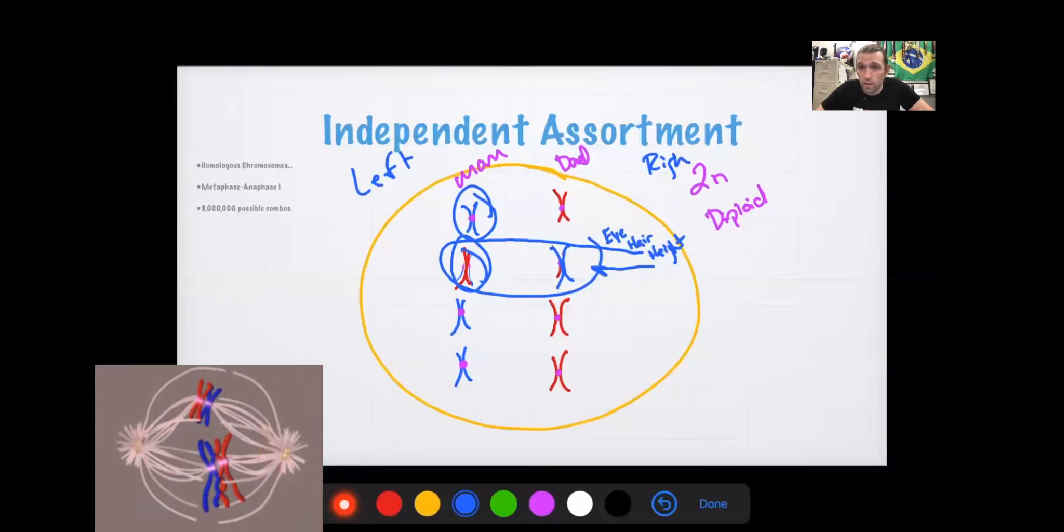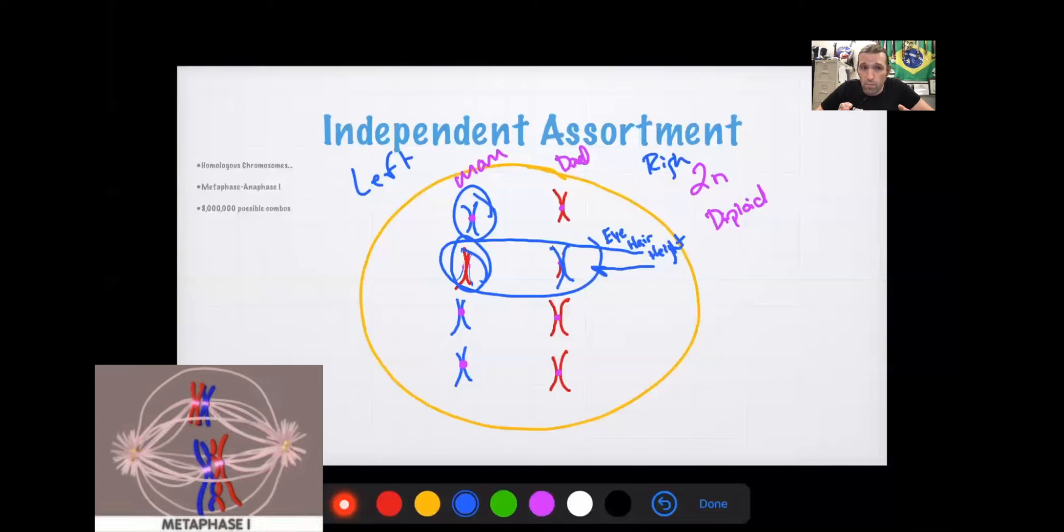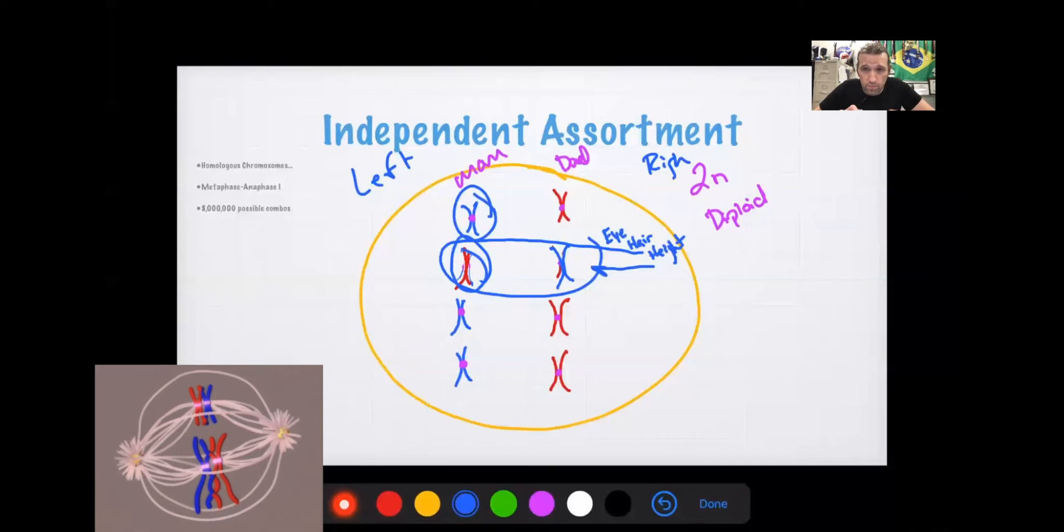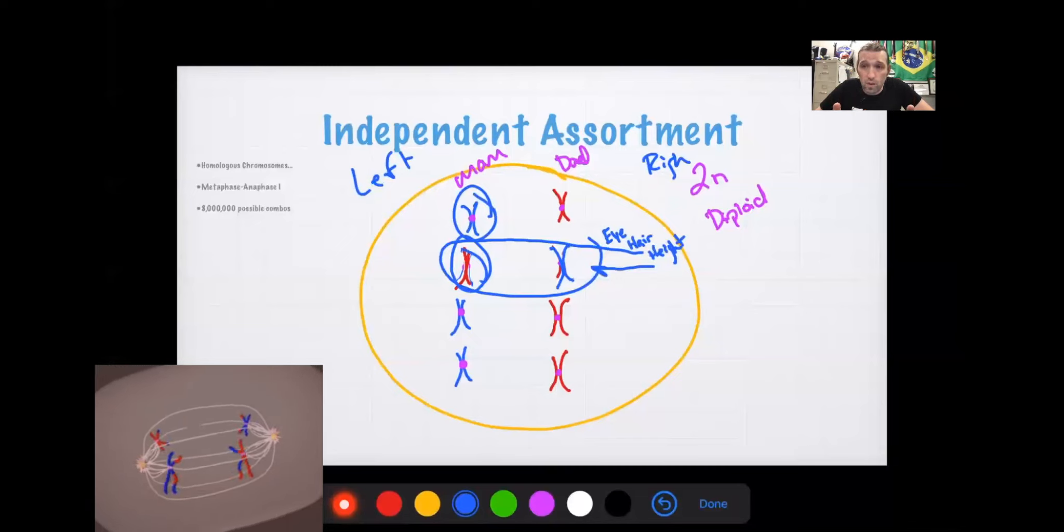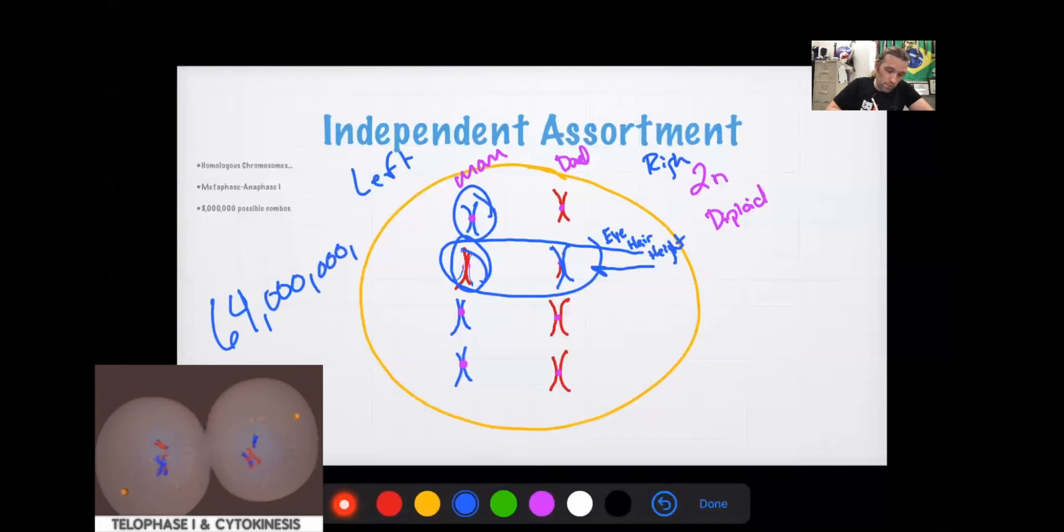That's a pretty big number of potential combinations. So that right there already introduces quite a bit of variation into what the sex cells are going to be, just simply by randomly assorting these in the middle during metaphase and anaphase. Okay, now, if all we did was the independent assortment, and you were to cross your sex cells with a person of the opposite sex's sex cells, you could have up to 64 billion possible combinations. That's just with independent assortment alone and fertilization, and fertilization is when the sperm and egg come together, right? So that is a huge amount of variation within our species.